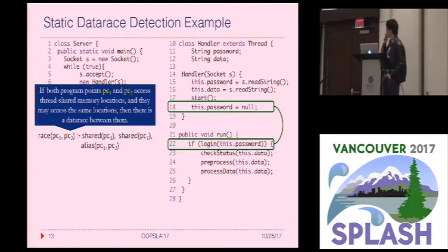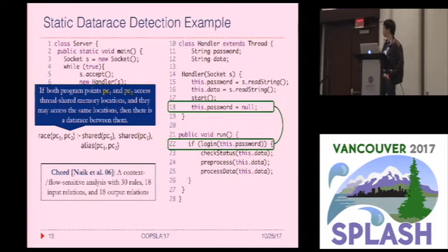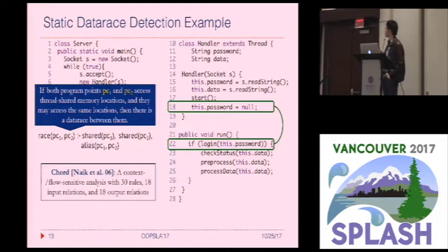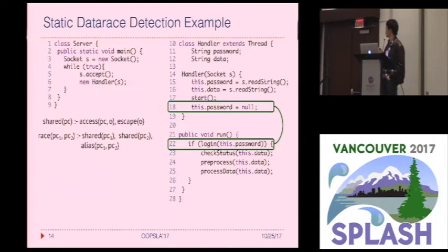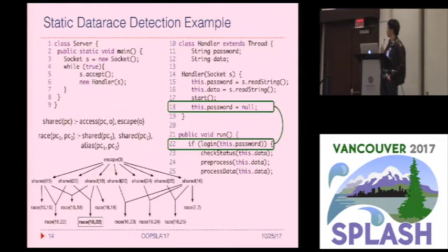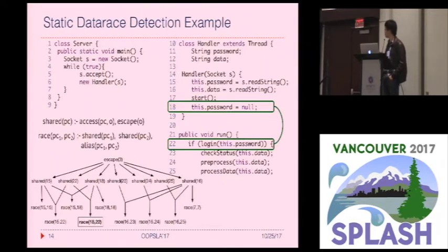Here we have a context- and flow-insensitive analysis, but in the paper we apply our approach to a fully context- and flow-sensitive analysis. If we apply this analysis, we will have the following derivation graph which explains how the analysis works. Each node in the graph represents either an input tuple or a derived tuple, and each edge is an instance of a rule.